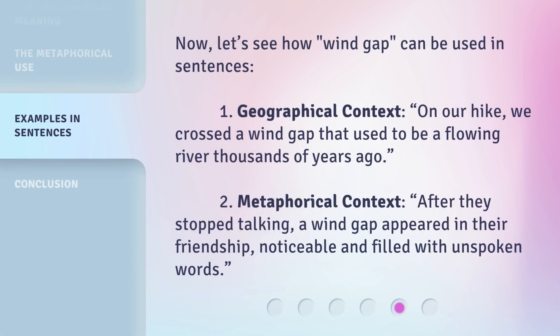Now, let's see how 'wind gap' can be used in sentences. First, geographical context: 'On our hike, we crossed a wind gap that used to be a flowing river thousands of years ago.'